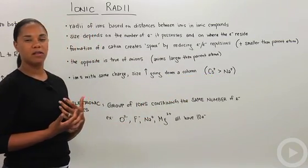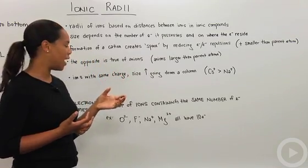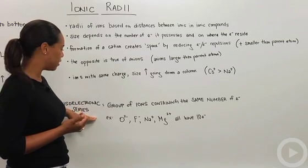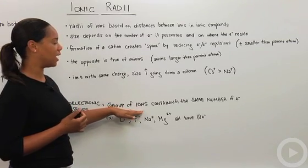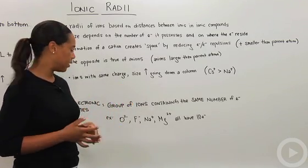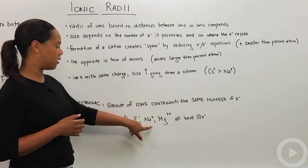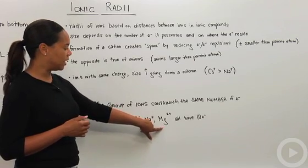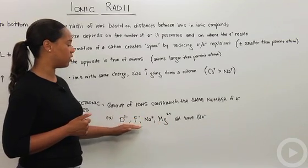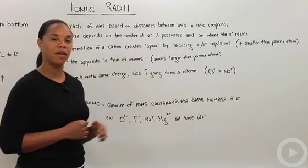So one other concept that might come up while you're thinking about atomic and ionic radii might be this definition of an isoelectronic series. And so that's when a group of ions containing the same number of electrons are being compared. So here I've written oxygen 2 minus, fluorine minus 1, sodium plus 1, and magnesium plus 2. These guys are part of an isoelectronic series because they all contain 10 electrons. And that's atomic and ionic radii.